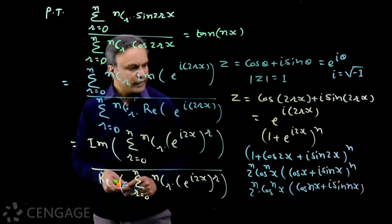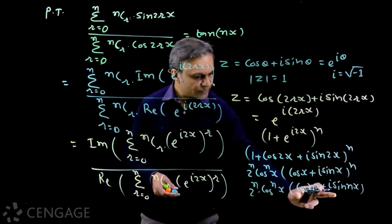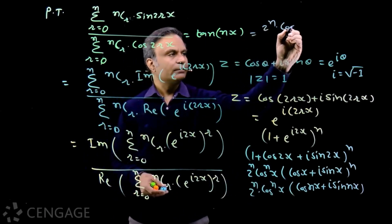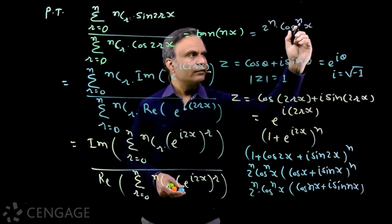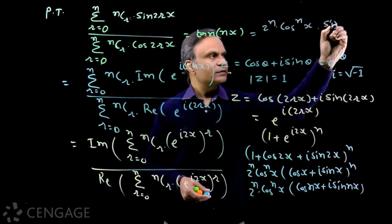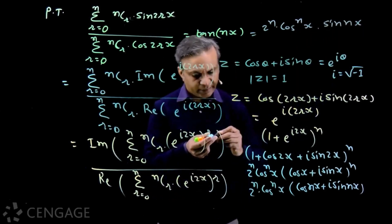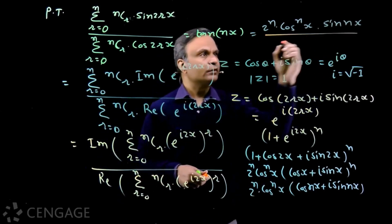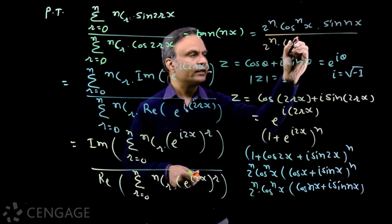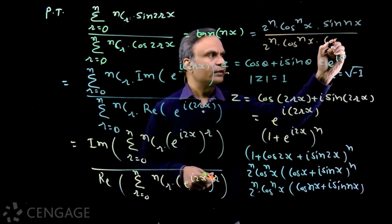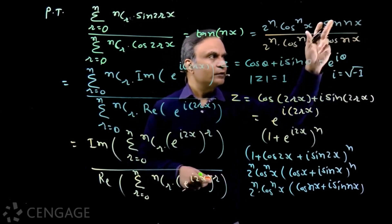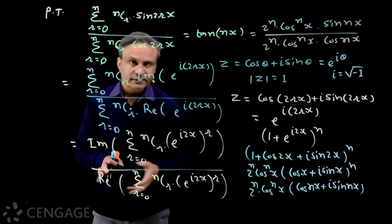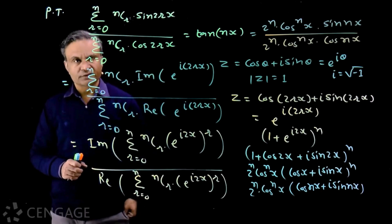In the numerator we have the imaginary part of this complex number, which is 2^n · cos^n(x) · sin(nx), and in the denominator the real part is 2^n · cos^n(x) · cos(nx). So this ratio equals tan(nx). Here we have one very interesting use of the polar form of complex numbers.